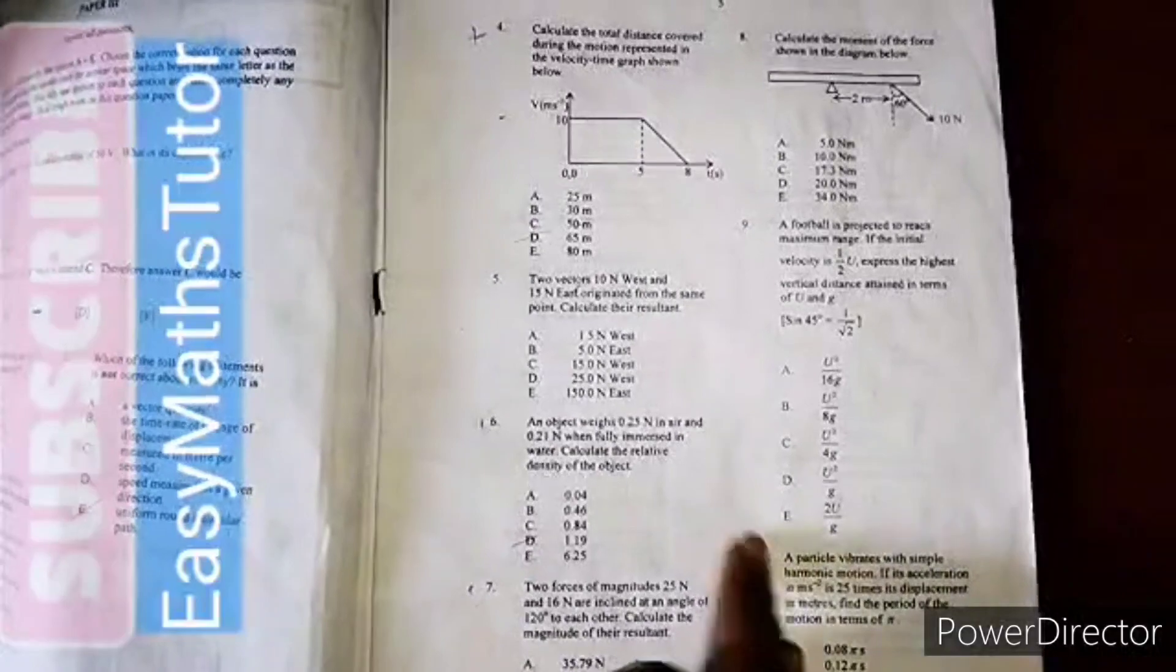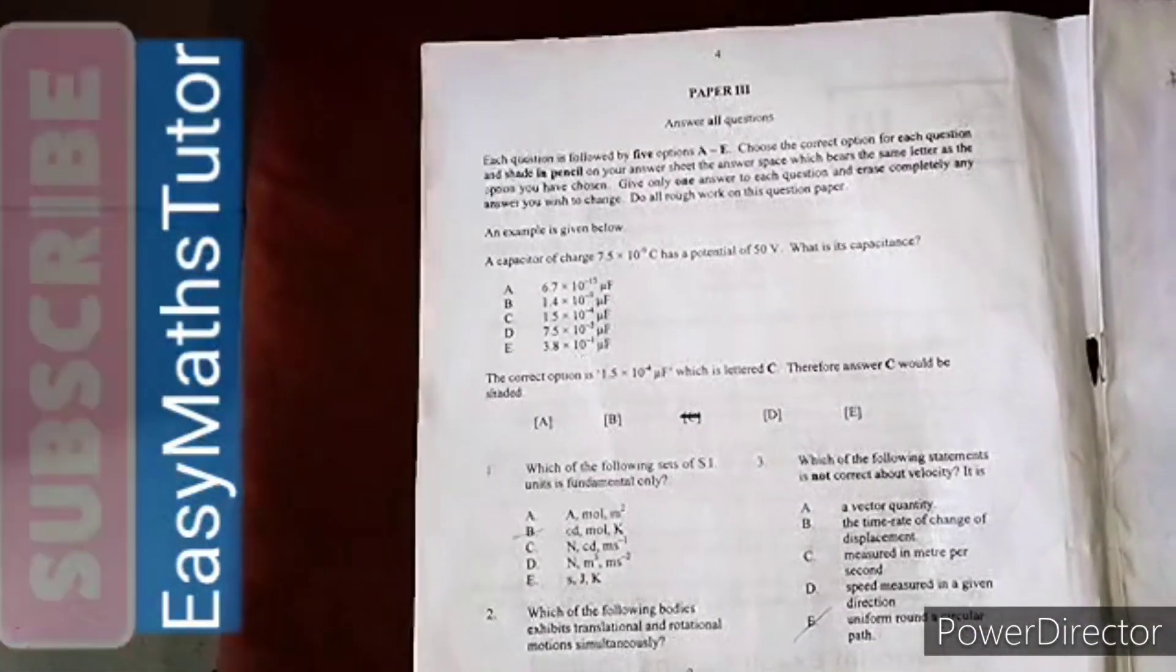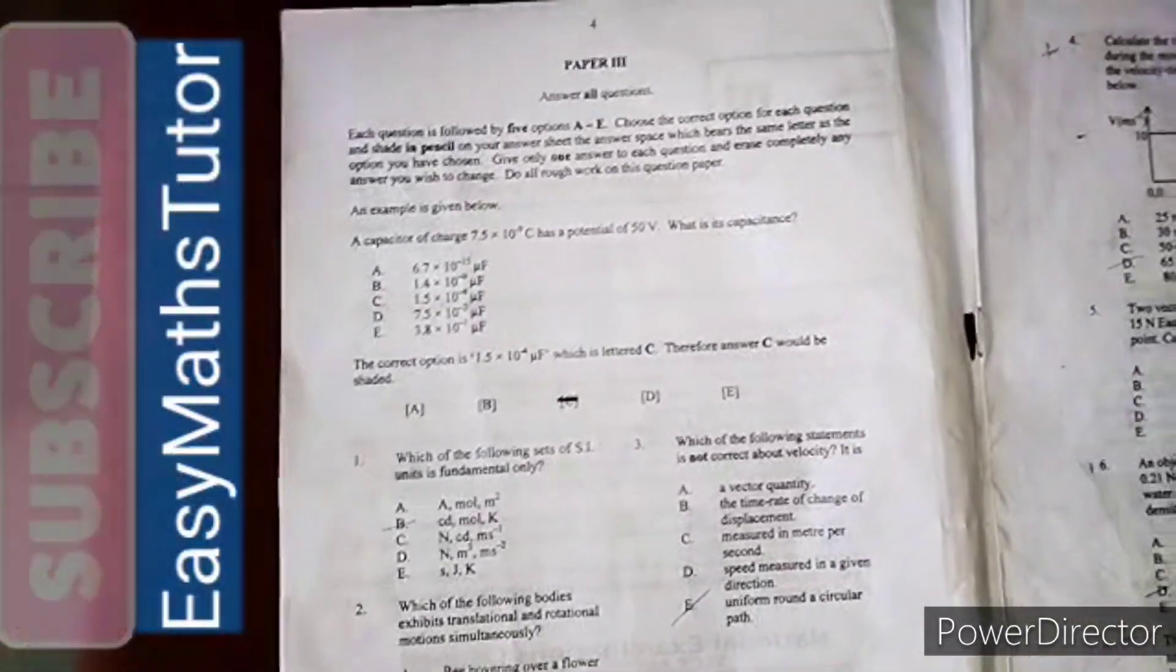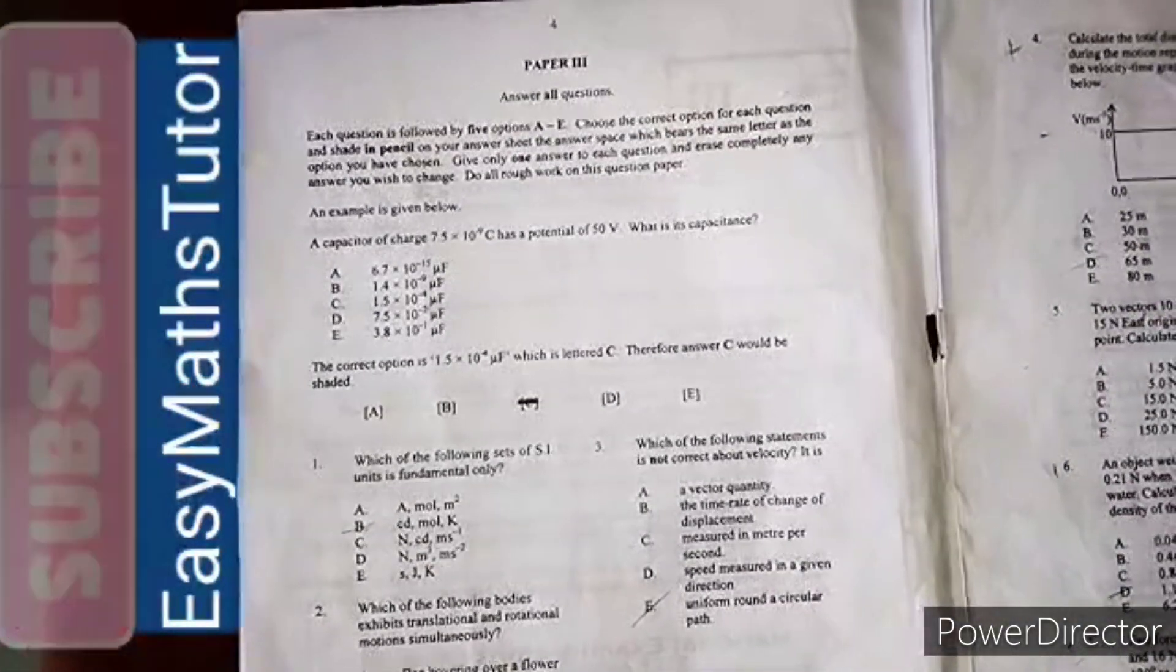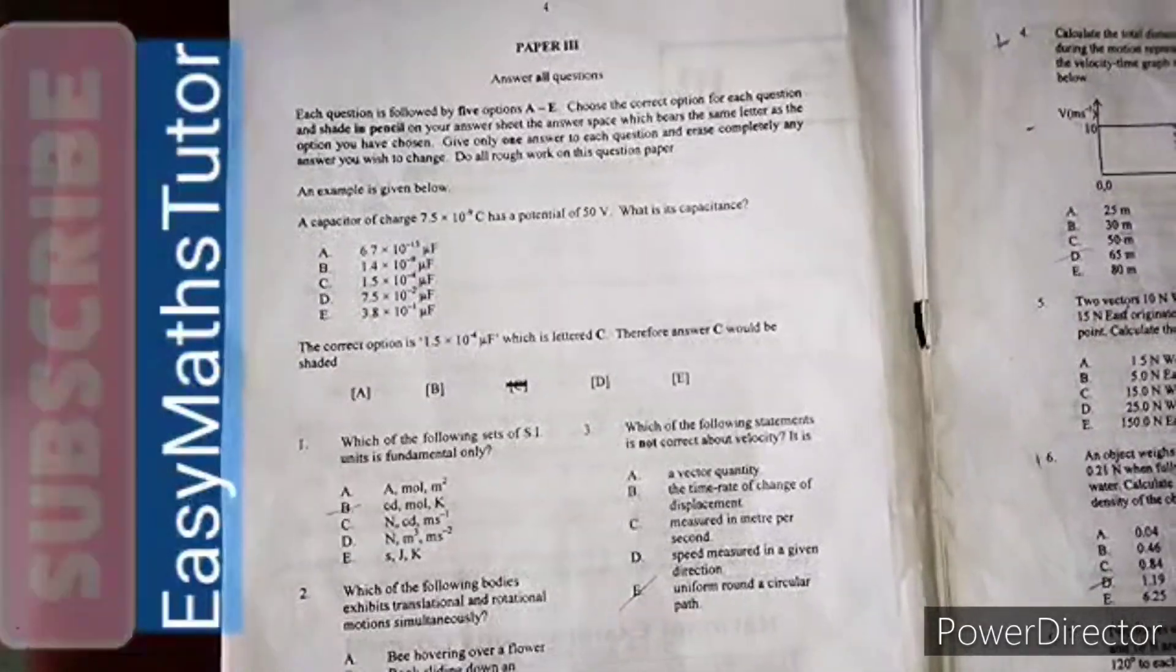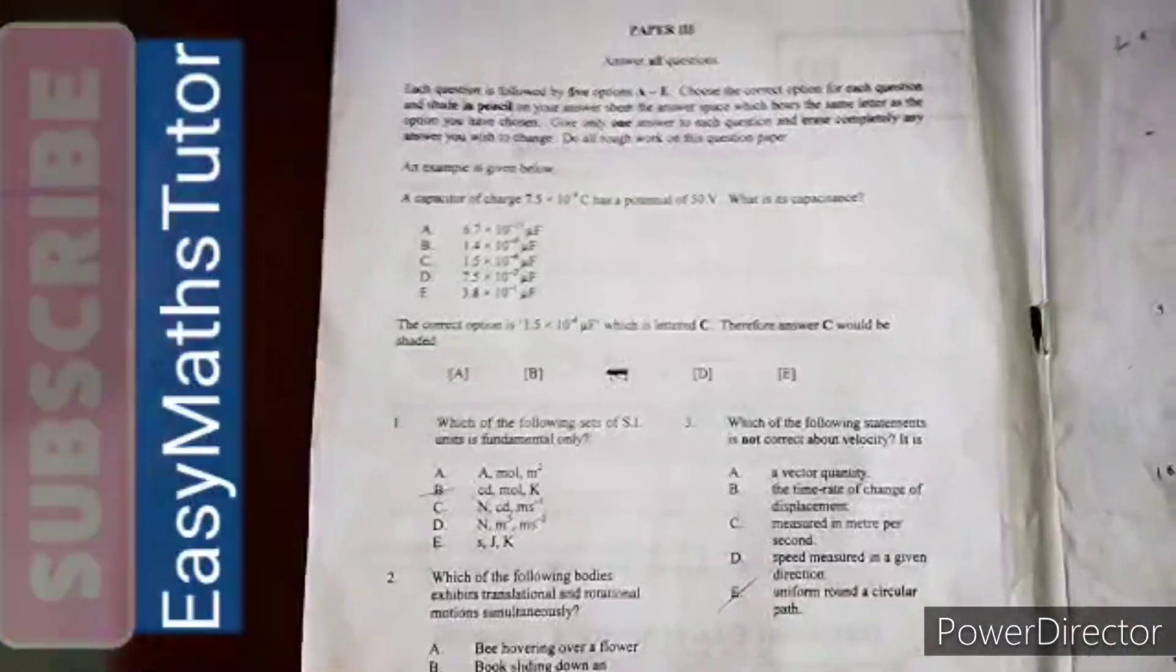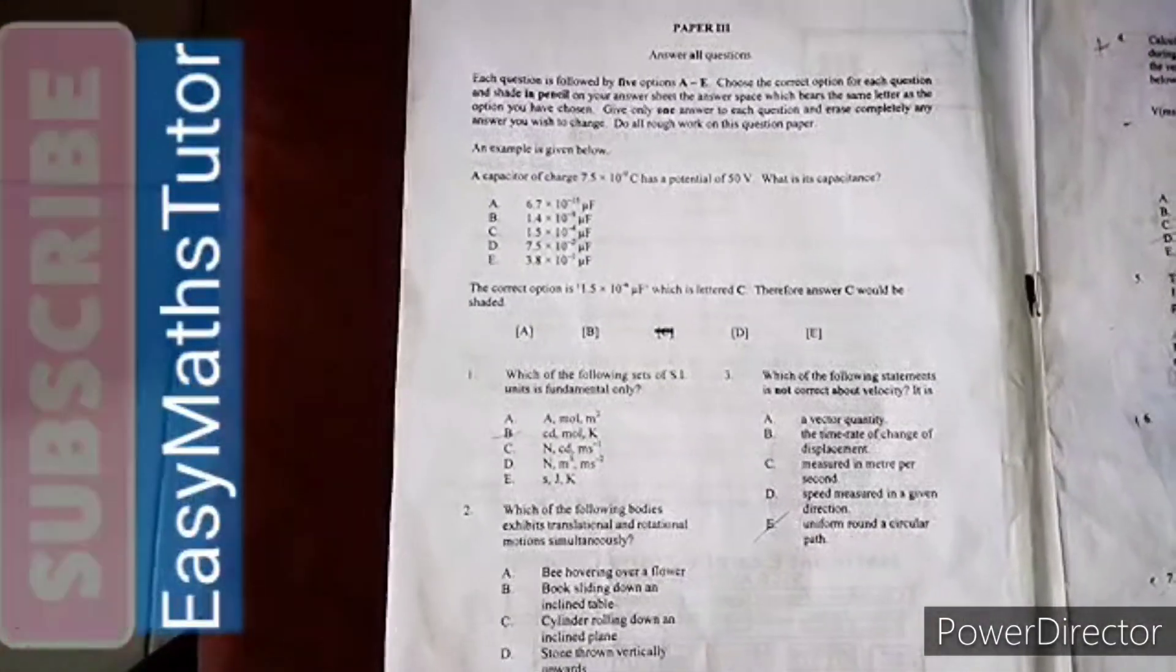We're going to solve the objective section. This section is made up of 50 questions with multiple options. When you solve the questions, you have to select an option.